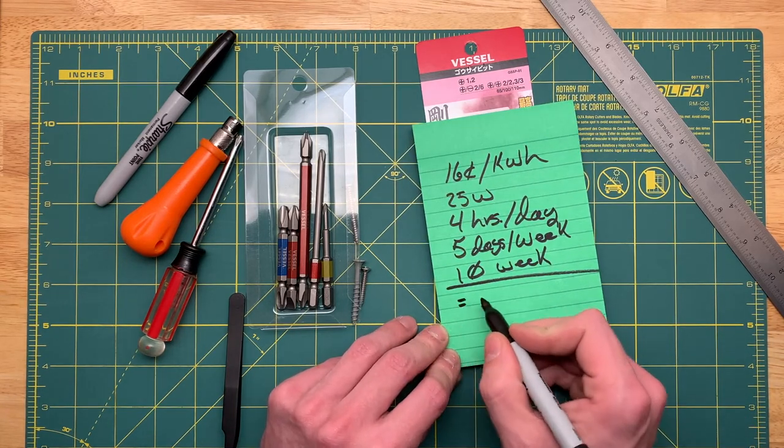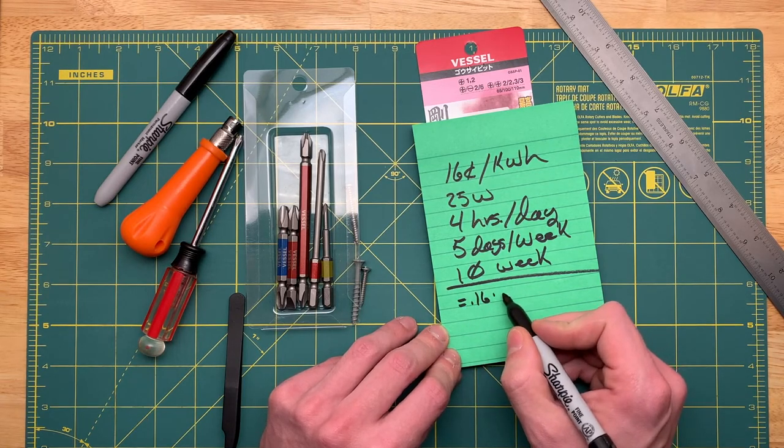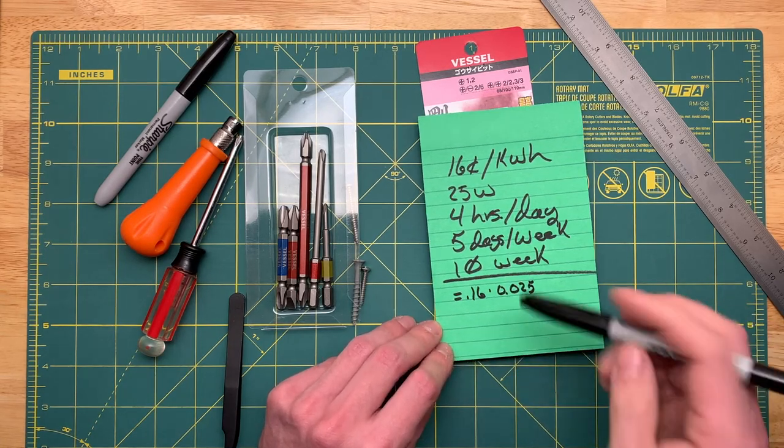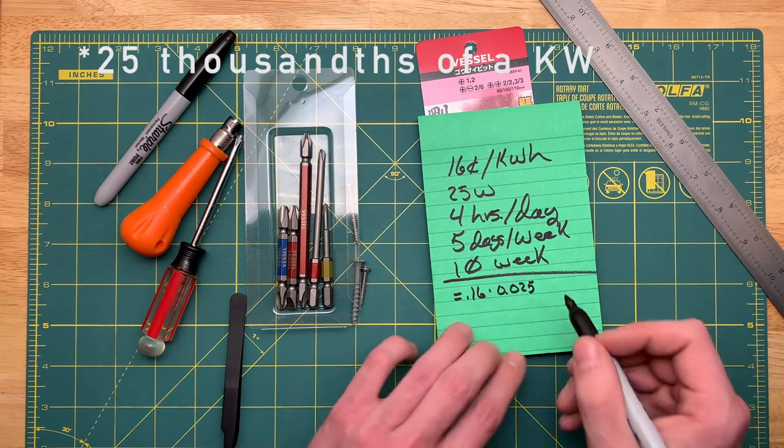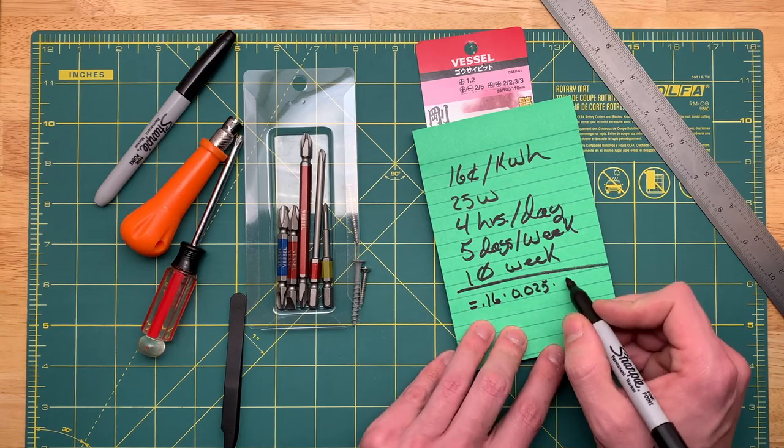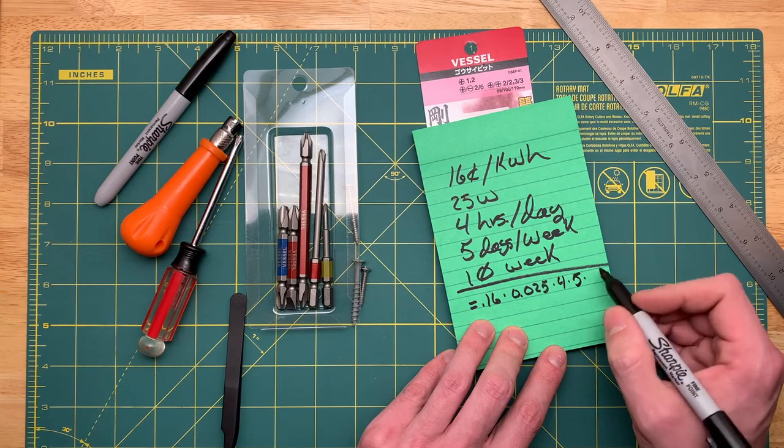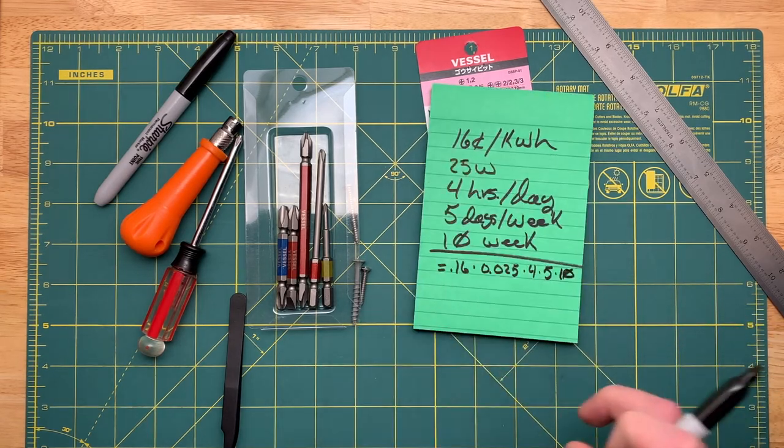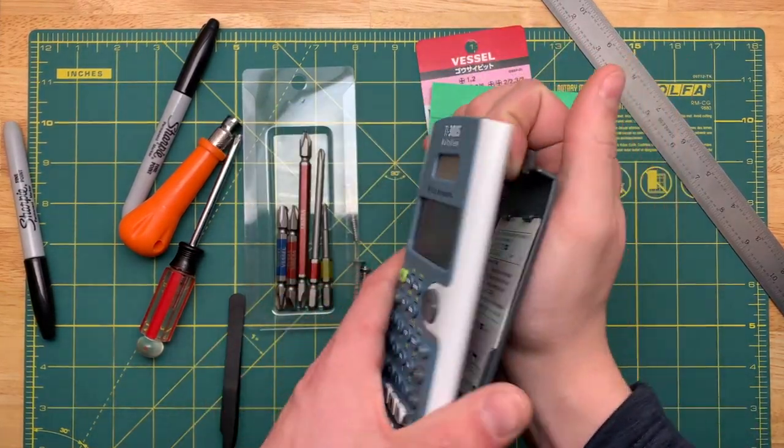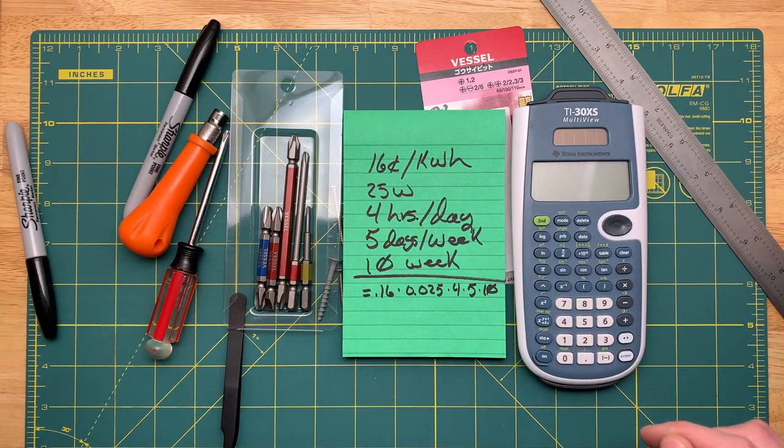So we'll take 0.16, multiply that by 0.025 because it's 25 thousandths of a watt, multiplied that by, I'm going to run out of space here, four hours per day times five times per week times 10 weeks. Let me grab a calculator. I'll grab my all-time favorite calculator, the TI-30XS.